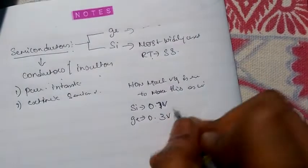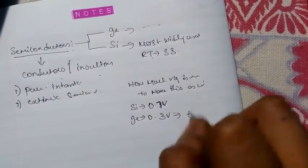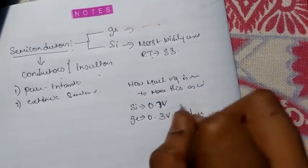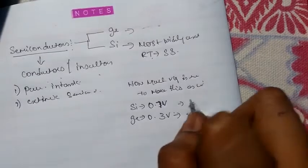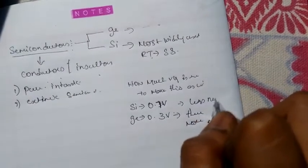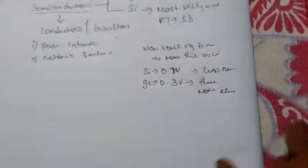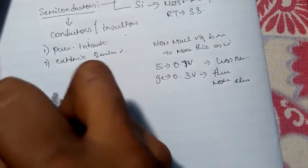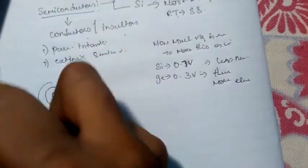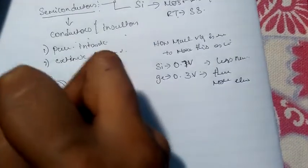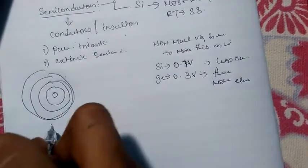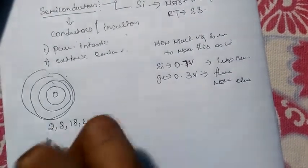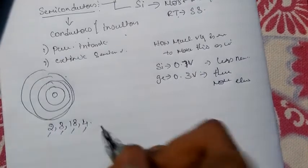Germanium requires only 0.3 volts because there are more number of electrons in germanium. In case of silicon there are less number of electrons. Looking at the atomic structure, germanium has four orbits, with electrons arranged as 2, 8, 18, and 4 in the first, second, third, and fourth orbit respectively.